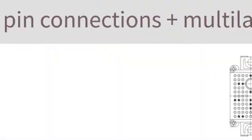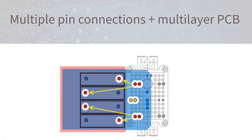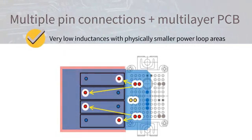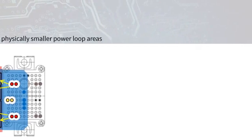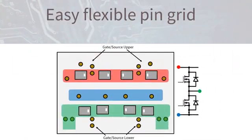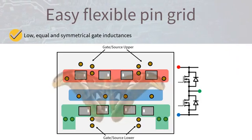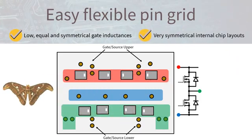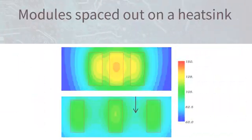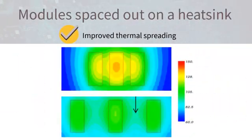Using multiple pin connections, combined with a multi-layer PCB, very low inductances with physically small power loop areas can be achieved. As you can see, the easy flexible pin grid allows for low, equal and symmetrical gate inductances plus very symmetrical internal chip layouts. Additionally, modules can be spaced out on a heat sink for improved thermal spreading.